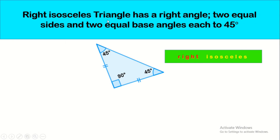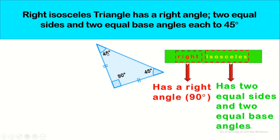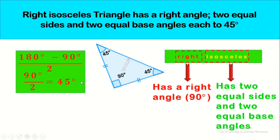Finally, right isosceles triangles. From the name: right means a 90-degree angle, and isosceles means two equal sides and two equal angles. Each of the two equal angles is 45 degrees. Why? The sum of angles is 180 degrees; subtracting the right angle leaves 90 degrees shared equally by the two remaining angles, giving 45 degrees each.